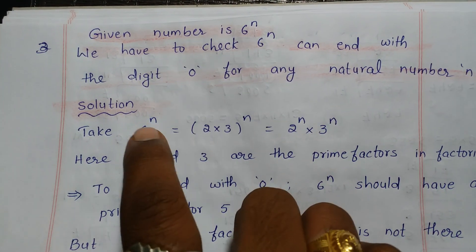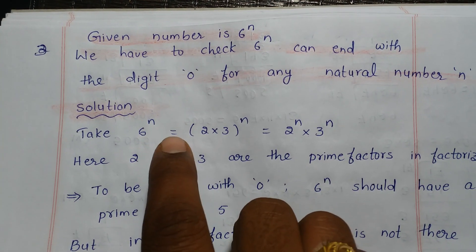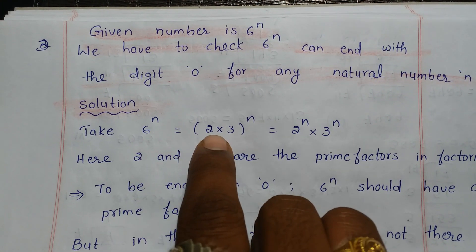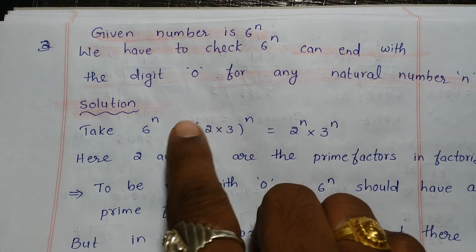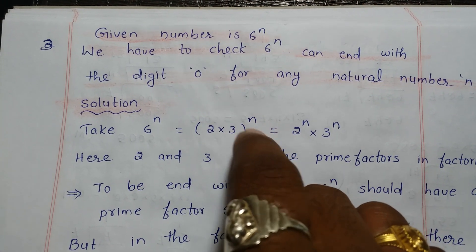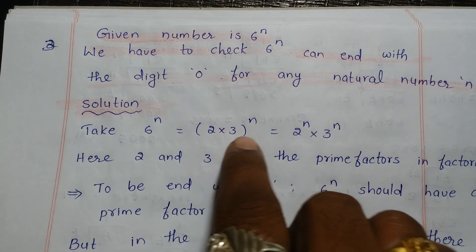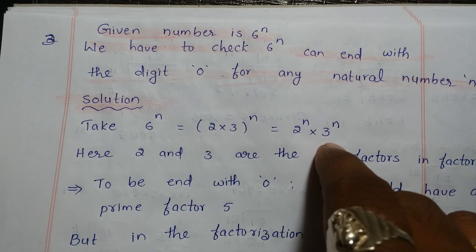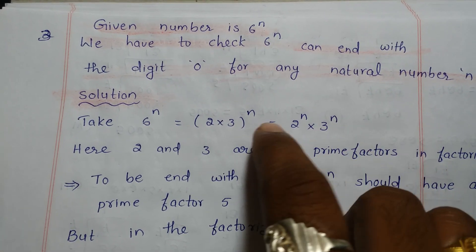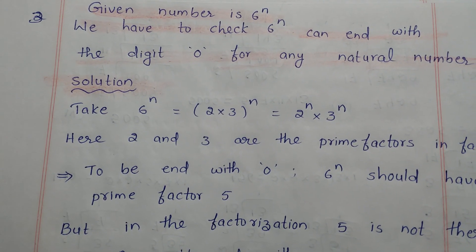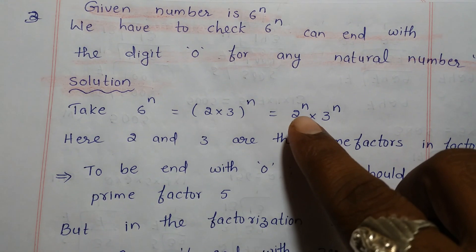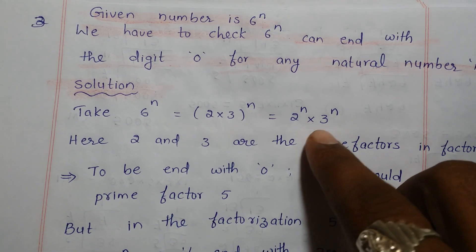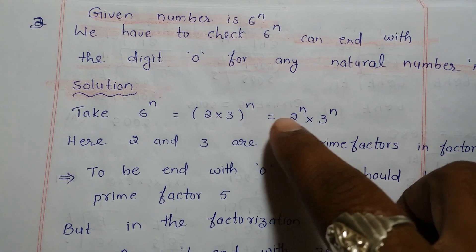Solution: Take the given expression 6 to the power of n and split it into factors. 6 can be written as a product of 2 and 3, so 6 to the power of n can be written as 2 to the power of n multiplied by 3 to the power of n, since (a × b) to the power of n equals a to the power of n multiplied by b to the power of n.